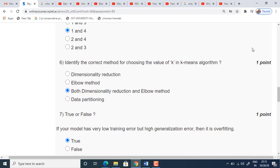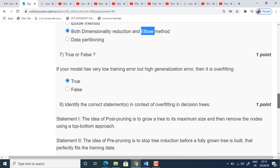Now we will see sixth question. Identify the correct method for choosing the value of K in K-means algorithm. We can choose this K, we can find out the value of K by using two methods. One is dimensionality reduction method and another one is elbow method. Both methods can be used, either of the methods can be used to find out the K value in K-means algorithm.